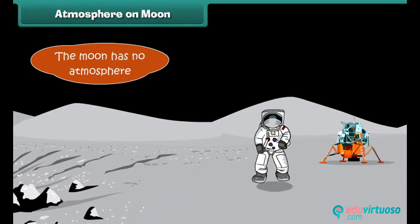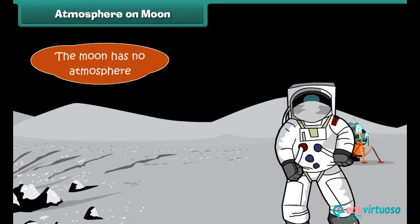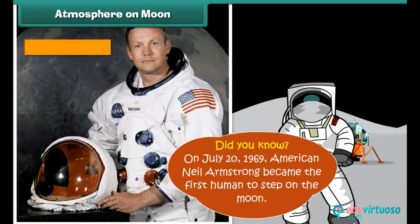Unlike Earth, the moon has no atmosphere, which is why the sky always appears dark even on the bright side. There can also be no sound transmission on the moon, since sound waves travel through air and the moon has no air. Did you know that on July 20, 1969, American Neil Armstrong became the first human to step on the moon?